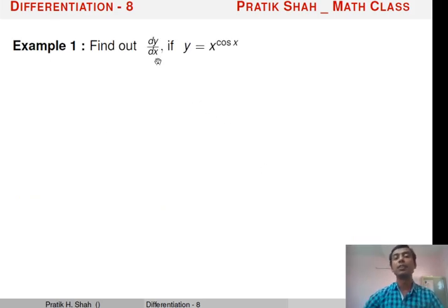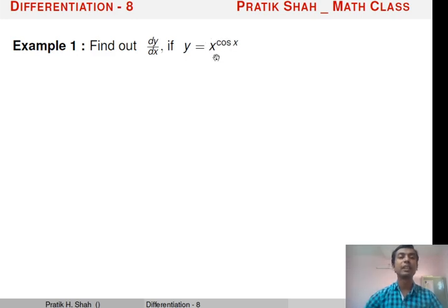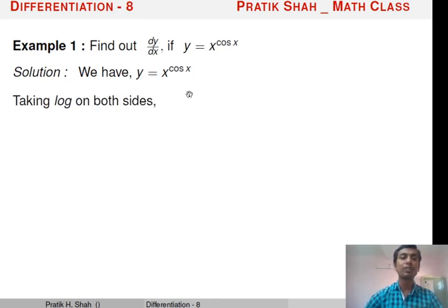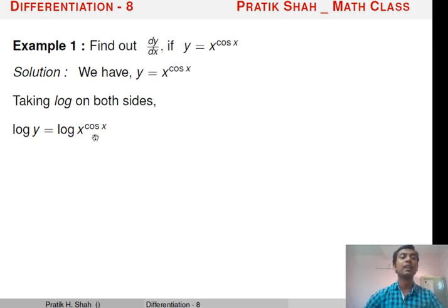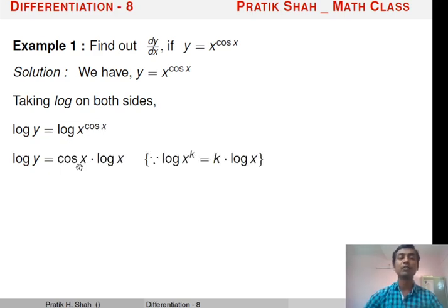First example: find dy/dx if y = x^(cos x). We know it is very difficult to differentiate this function directly. So first we shall take the log function on both sides. Taking log on both sides, we get log y = log(x^(cos x)). Now, using the property of the log function, the power can be taken into multiplication. So log y = cos x · log x.